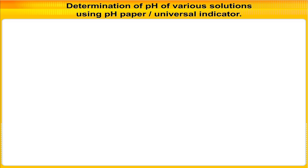Experiment 1: Determination of pH of various solutions using pH paper or universal indicator solution.